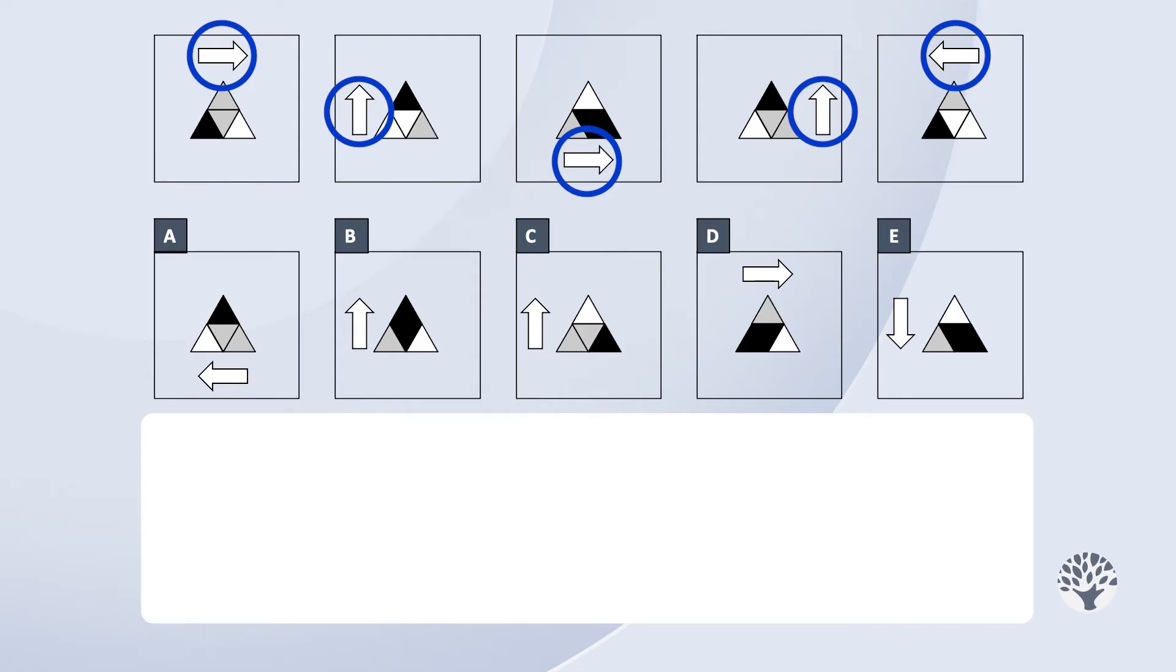However, when we look at the direction of the arrow, we can't see a pattern yet. Generally, when we don't see a rule, we have to assume that there is no rule.